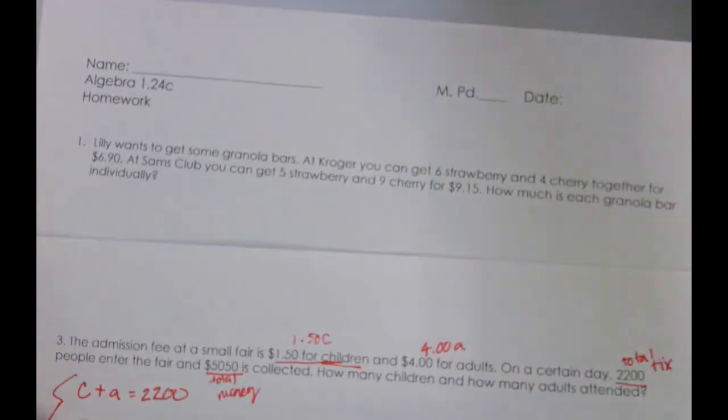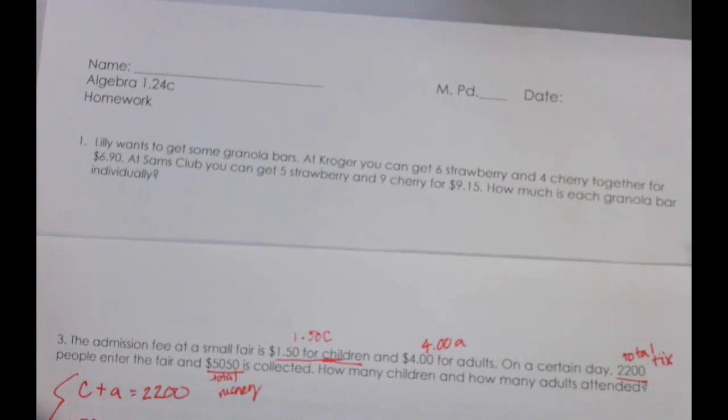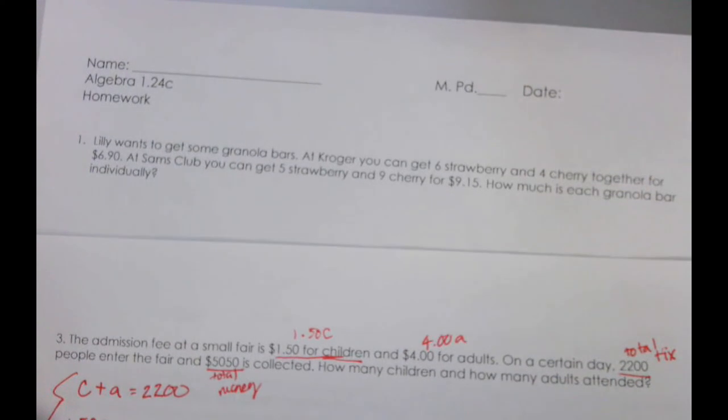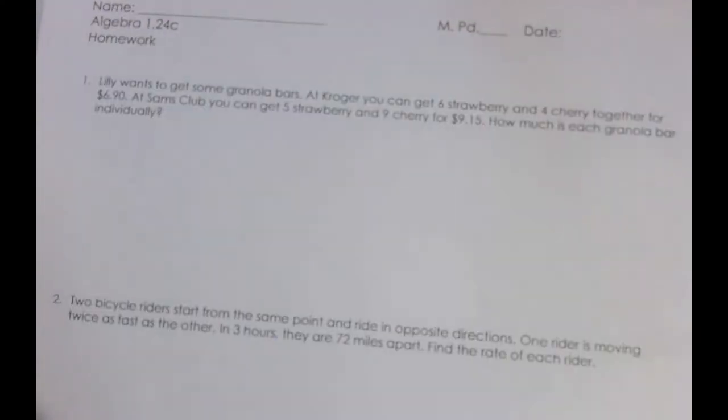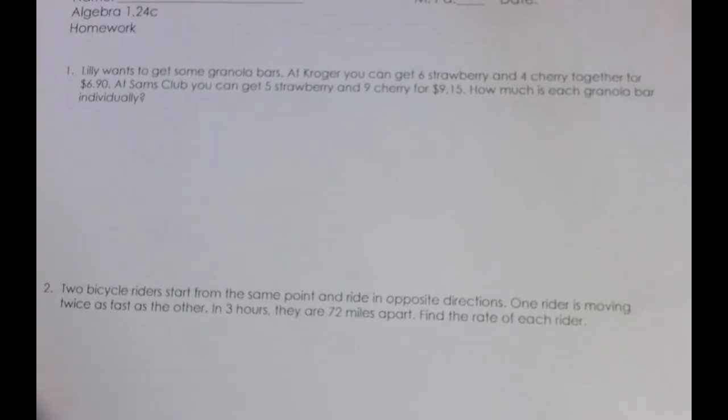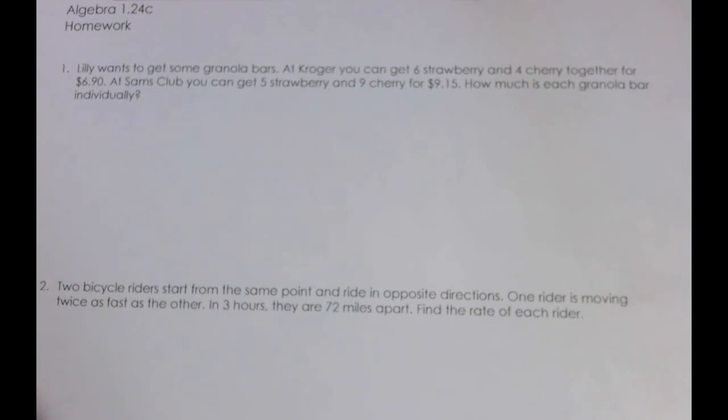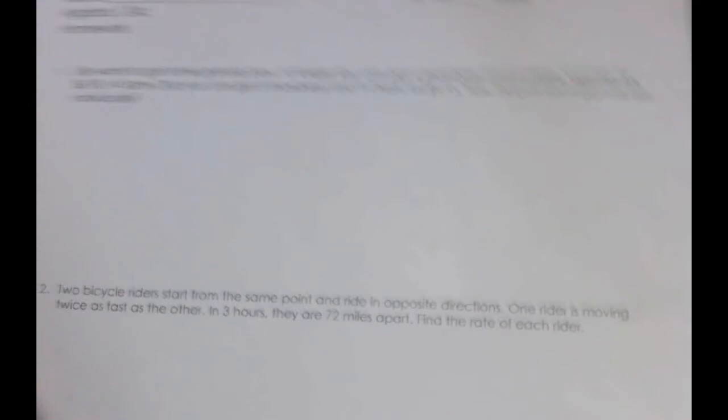Number one for the homework is like number five, so if you understood how I set up number five, number one is going to be similar. Number four for the homework is like number three, so if you understood the way I set up number three, number four should be a breeze. I'm going to let you skip number two for the homework, so the one about the two bicycle riders you do not have to do. So you still have to complete the classwork and then you have to do question number one about Lily. That is all.